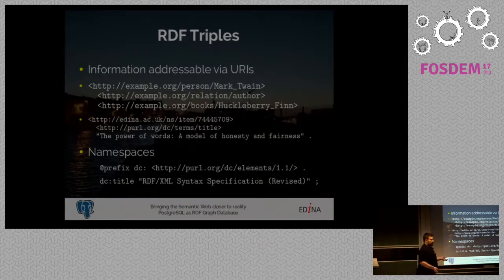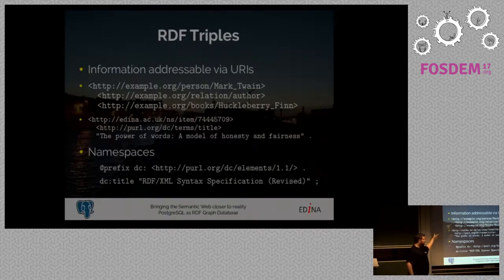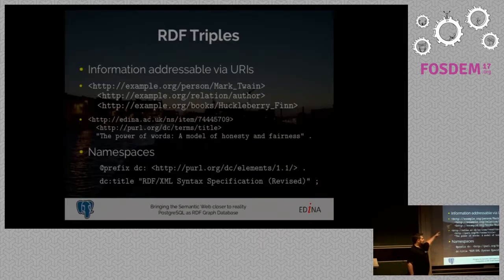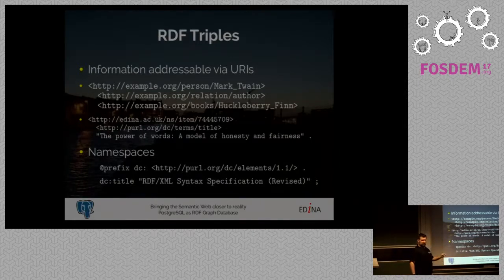Triples usually have URIs encoded in them that let you instantly access the referenced thing. In this example, we have an example.org person called Mark Twain, who has the predicate example.org/relation/author, to link to an example.org book.